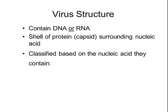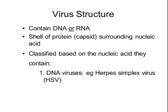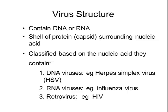We can classify viruses based on the type of nucleic acid they contain. If a virus has DNA inside, we call it a DNA virus — an example is the herpes simplex virus. If it has RNA on the inside, it's called an RNA virus; an example is influenza, which causes the flu. And then there's a third category called retroviruses — an example is HIV — which infect living cells in a different way.